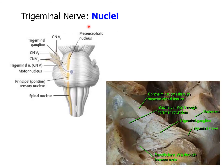The trigeminal nerve is the fifth cranial nerve and originates from four nuclei in the brain, including three sensory nuclei and one motor nucleus. Starting in the midbrain, the mesencephalic nucleus is related to proprioception. In the region of the pons, the principal sensory nucleus is related to light touch sensation, and the spinal nucleus extends from the medulla oblongata down to the upper two or three segments of the spinal cord, concerned with pain and temperature sensations. The motor nucleus is medial to the principal sensory nucleus.